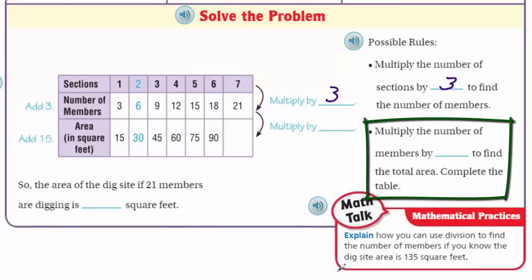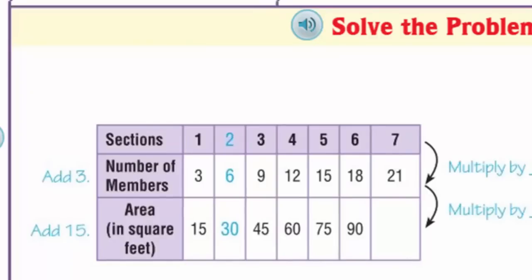Multiply the number of members by blank to find the total area. Complete the table. That's right, because they're working in a particular area. It says that in each section, there is 15 square feet. And so, two sections would be 30 square feet. So, here I'm looking at a relationship of two numbers here. Three and 15. Six and 30. Nine and 45. What am I having to multiply by?